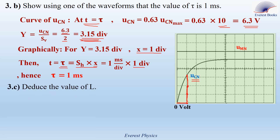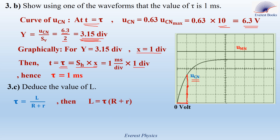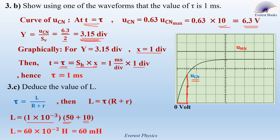Part 3C: Deduce the value of L. Since tau equals L/(R + r), then L equals tau times (R + r). Tau equals 1 millisecond equals 1×10⁻³ seconds. R equals 50 ohms and r equals 10 ohms. Therefore, L equals 60×10⁻³ henry, or 60 millihenry.